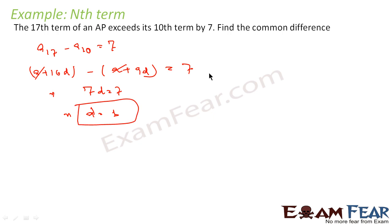Therefore d equals 1, and that is the answer. The question asked us to find the common difference. Using a17 equals a plus 16d and a10 equals a plus 9d, subtracting gives 7d equals 7, so d equals 1. Very simple.